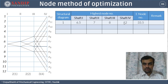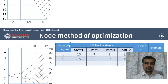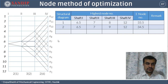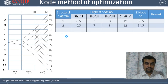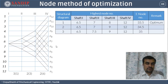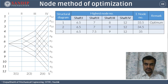The summation of highest node numbers for the first structural diagram is 33.5. For the second structural diagram the highest node numbers are 6.5, 7, 9, and 12, giving a summation of 34.5. For the third structural diagram the highest node numbers are 6.5, 7.5, 9, and 12, giving a summation of 35.